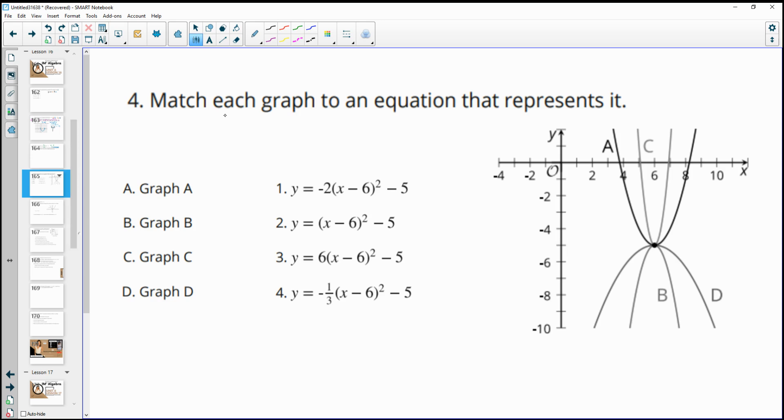Number four, match each graph to the equation that represents it. So we've got all these graphs over here. Here's all the equations. So one thing I notice right away is these values that are negative. So I know that these two are going to be opening down, which means b and d. So b slash d are the ones that open downward. So I can narrow down those graphs.